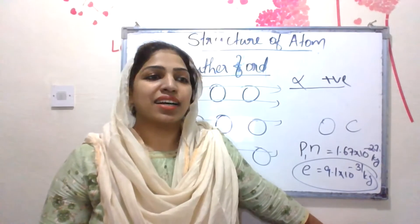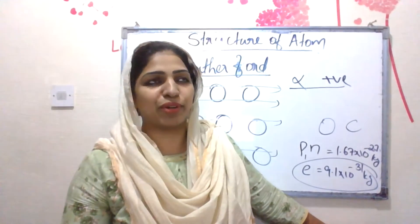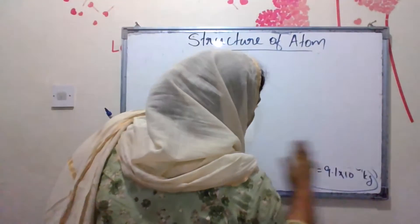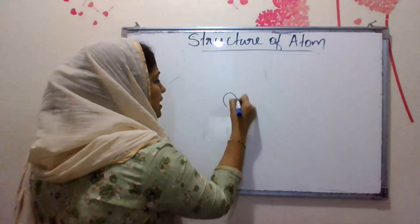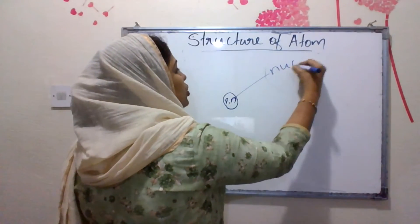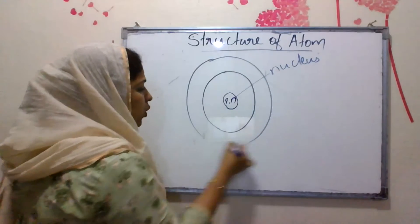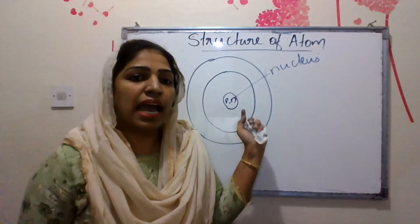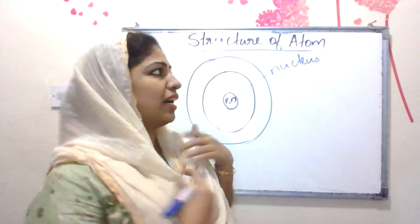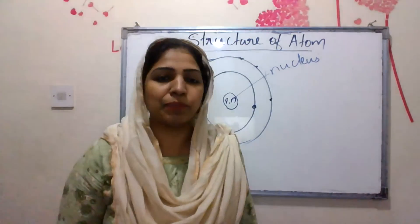Protons and neutrons are situated at the center of the atom. This center is called the nucleus. Electrons revolve around the nucleus in circular orbits. Electrons have negligible mass compared to protons and neutrons. Most of the mass of the atom is located at the center. This is Rutherford's Model of Atom.